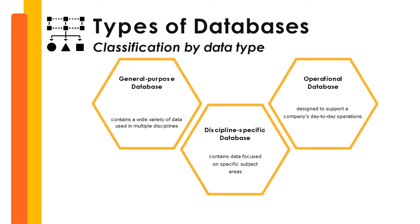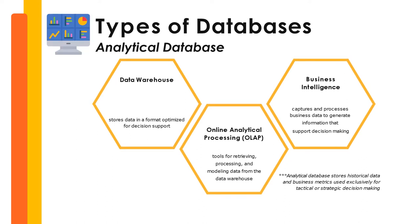Another classification is by the type of data stored. We have a general-purpose database, which contains a wide variety of data used in multiple disciplines. We may also have a discipline-specific database, which contains data focused on specific subject areas. There is also an operational database, designed to support a company's day-to-day operations, and analytical databases such as the data warehouse — where data is stored in a format optimized for management decisions — online analytical processing (OLAP), which is an umbrella term for tools used to retrieve, process, and model data from the data warehouse, and business intelligence, which captures and processes business data to generate information that supports decision-making.